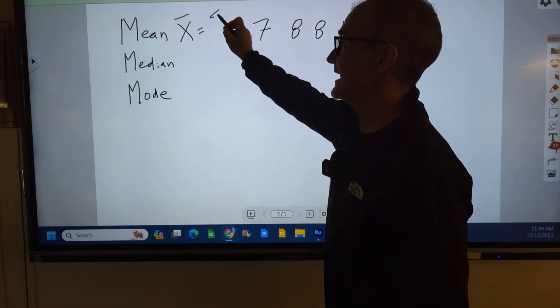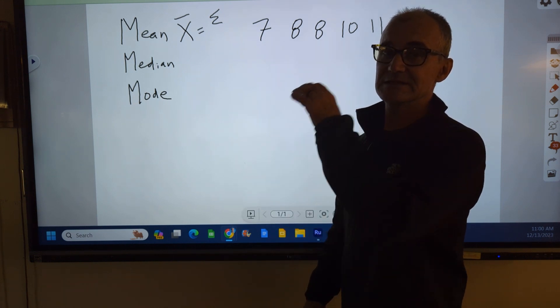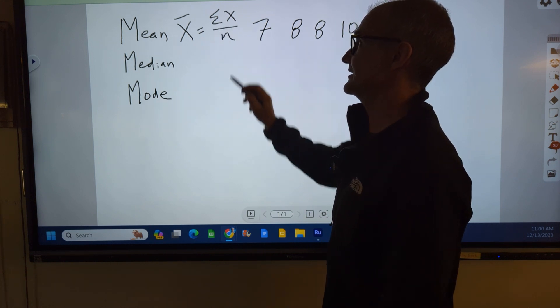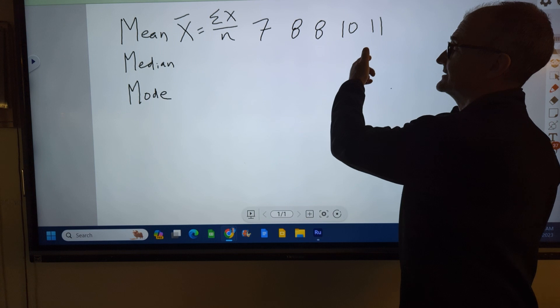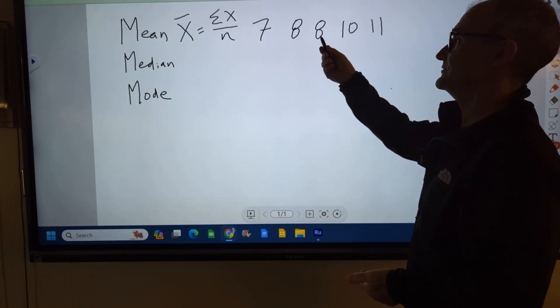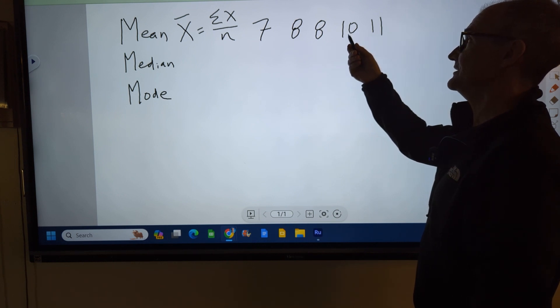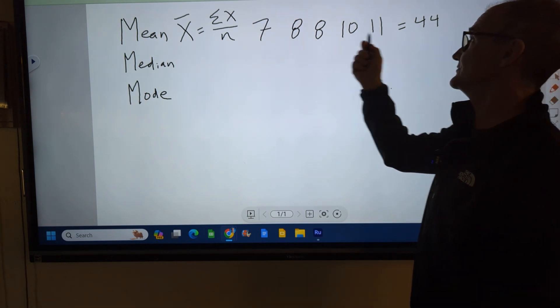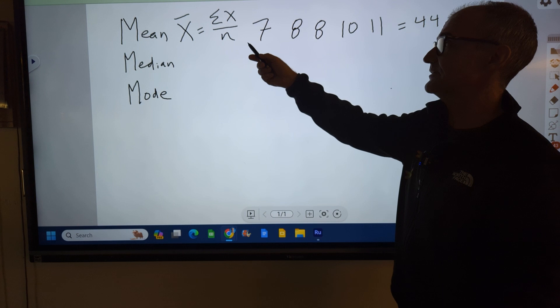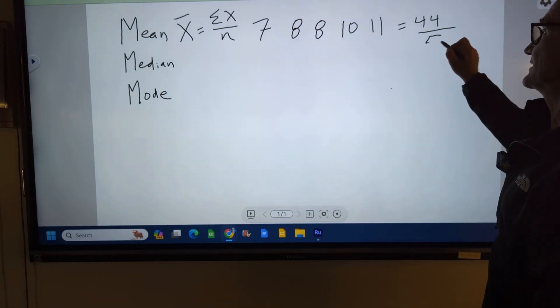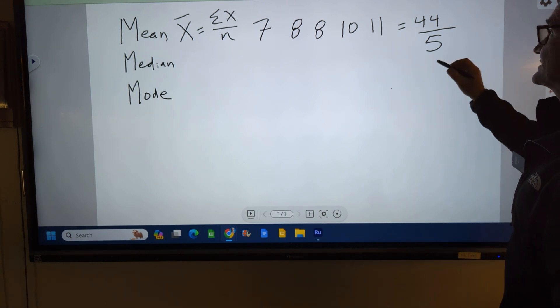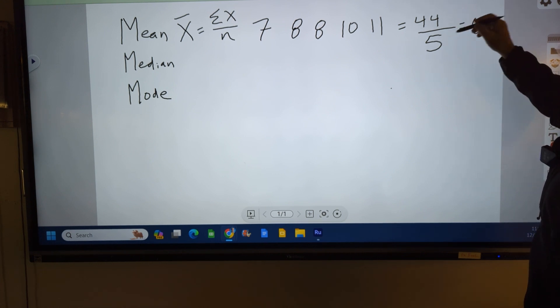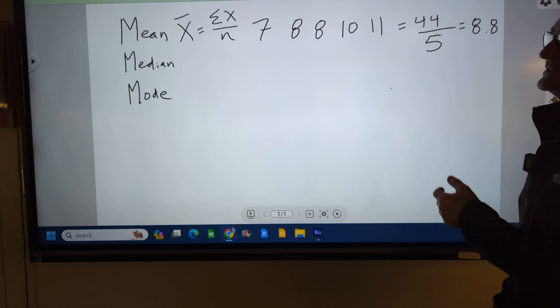And the definition of that is you add—that's the Greek letter sigma, meaning add the whole column up. Add all your X values. Divide by the number of values. So if I wanted to find the average of this set of data, I would go 7 plus 8, 15, plus 8, 23, plus 10, 33, plus 11, 44. So the sum of my values is 44 divided by N. The number of values, 1, 2, 3, 4, 5. So 44 divided by 5, that would be my average. 5 goes into 44 eight times with 4 left over. So 8.8 is my average shoe size.